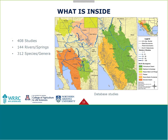Ultimately we ended up with 408 studies — including reports, peer-reviewed journal articles, and book chapters — covering 144 rivers and springs in desert watersheds in the U.S. and Mexico, and 312 species and genera. The most commonly studied species were cottonwoods, tamarisks, willows, and mesquite. The most commonly studied rivers were the Rio Grande with 83 studies, the Colorado River with 73, the San Pedro with 53, the Gila River with 27, and the Bill Williams with 25.